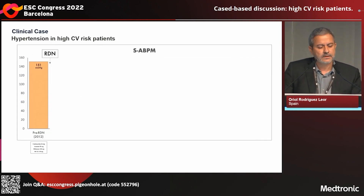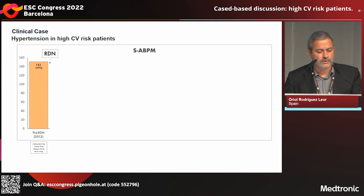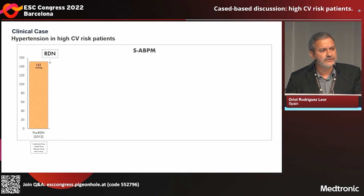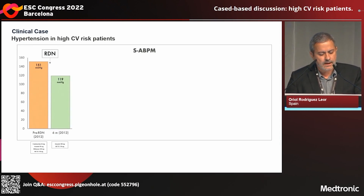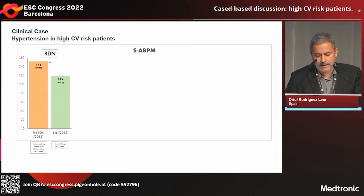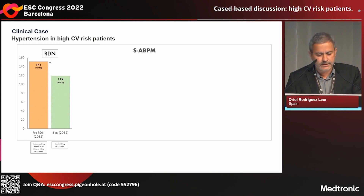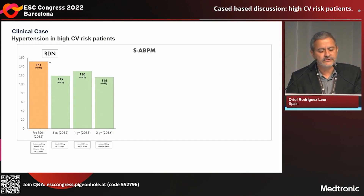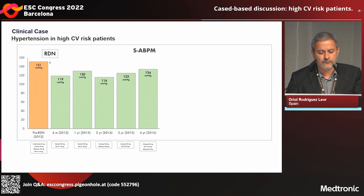This was the mean systolic ambulatory blood pressure just prior to renal denervation — as you can see here, 151 mmHg — and the patient was on four different drugs. At six months, the systolic ambulatory blood pressure improved and was below 120. This improvement was seen in the follow-up during all the years.